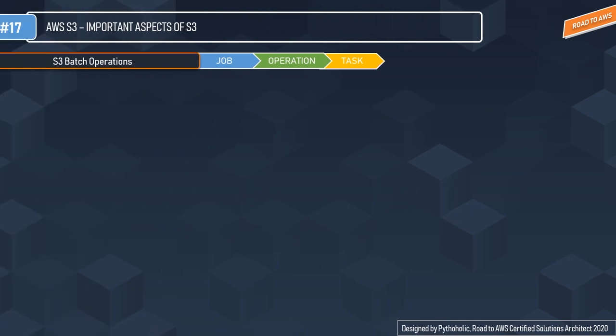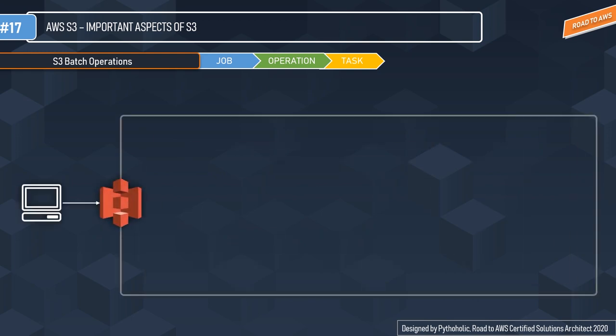This is a great feature from S3. Batch operations means when you have a huge set of operations that you collectively push to be executed — that is called a batch. There is very minimal human interaction and you have predefined steps that you put together and execute. That is the whole concept behind batch operations.